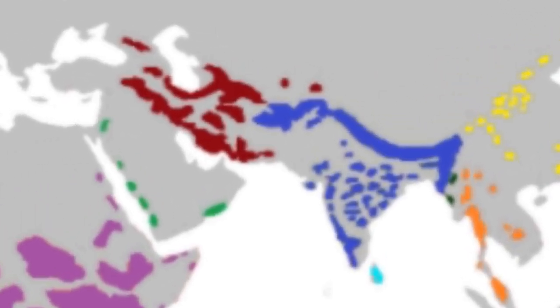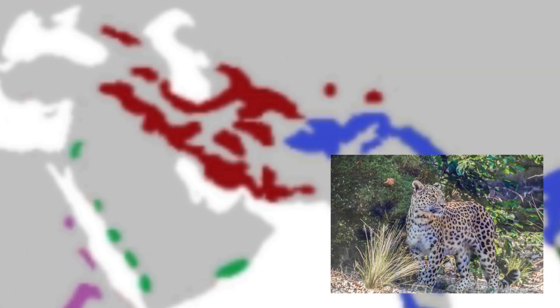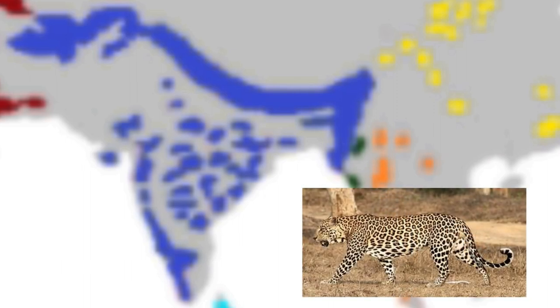The Arabian leopard is native to the Arabian Peninsula. The Persian leopard is native to eastern Turkey, southern Russia, the Iranian plateau and Hindu Kush. The Indian leopard is native to the Indian subcontinent, Myanmar and southern Tibet.